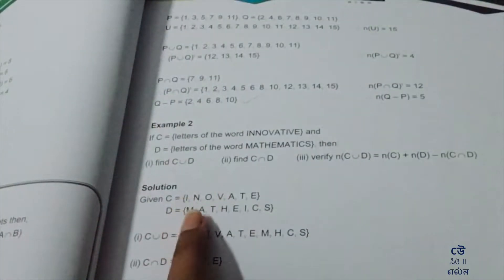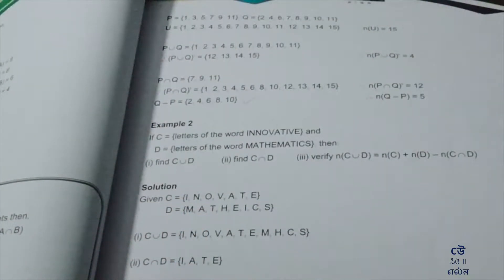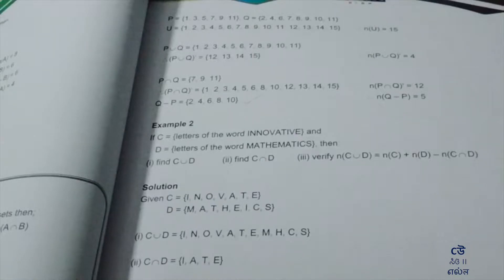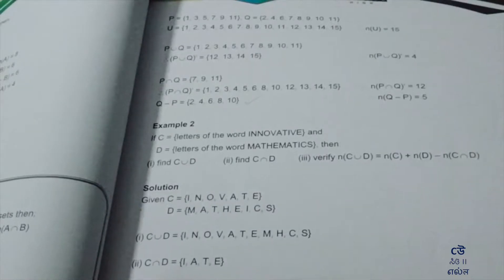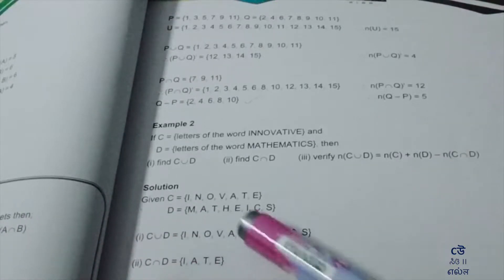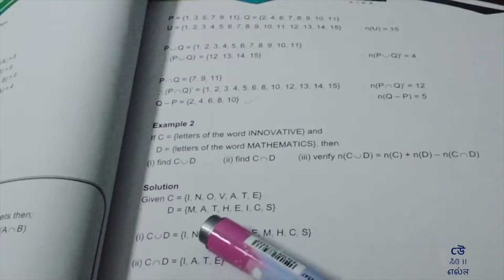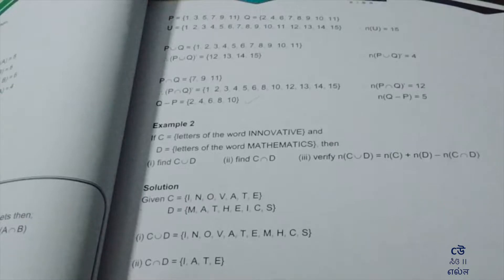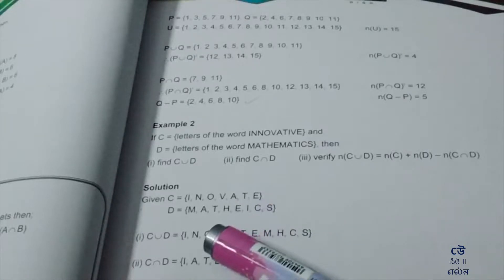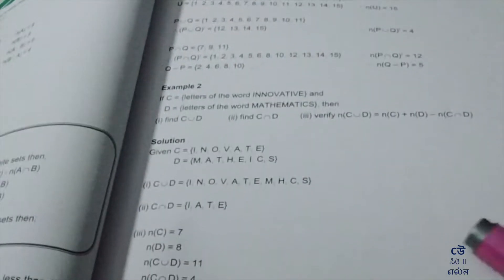What is C union D? This is the union, so I will write C union D. I-N-O-V-A-T-E, all unique letters. For the intersection, we find common elements. I is here, common. A is common. O is here, T is here, E is here.